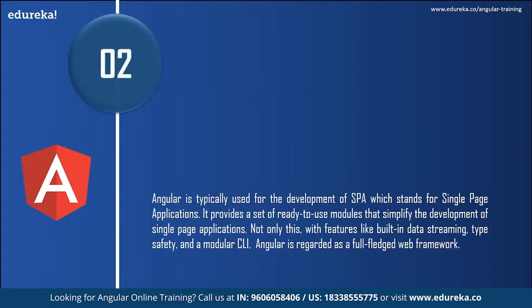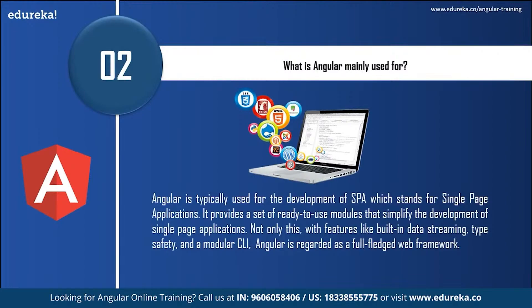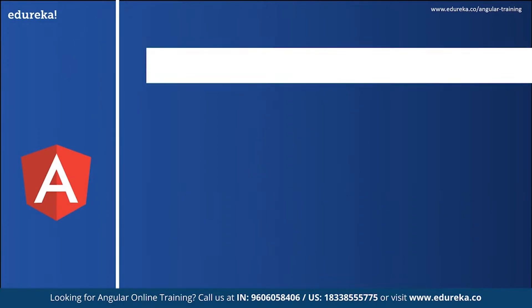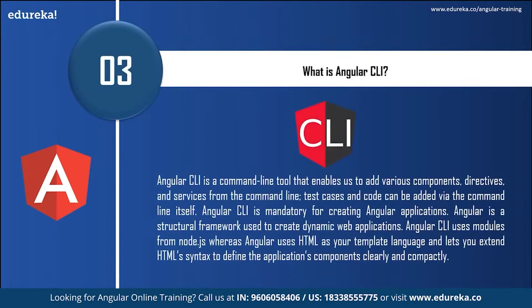What is Angular mainly used for? Angular is typically used for the development of single-page applications. It provides a set of ready-to-use modules that simplify the development of single-page applications. With features like built-in data streaming, type safety, and a modular CLI, Angular is regarded as a full-fledged web framework.